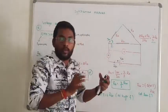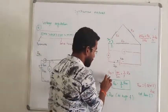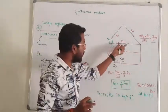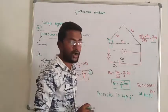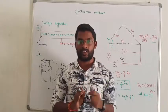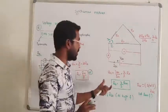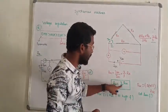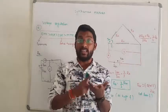So what is the conclusion? For a star-connected machine, the measured line-to-line resistance is 2 × R_A, so R_A equals the measured value divided by 2. For a delta-connected machine, the measured value is 2/3 × R_A, so you divide by 2/3 — or multiply by 3/2 — to get the actual per-phase armature resistance.